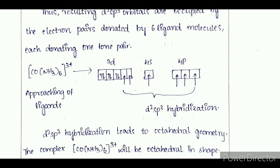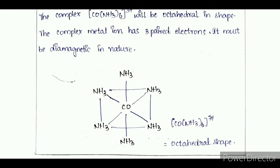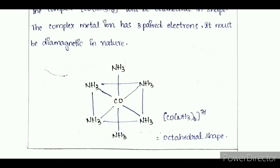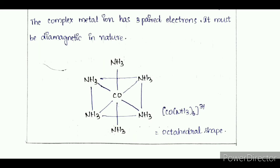d2sp3 hybridization leads to octahedral geometry. The complex [Co(NH3)6]³⁺ will be octahedral in shape. The complex has paired electrons and must be diamagnetic in nature. Thank you.